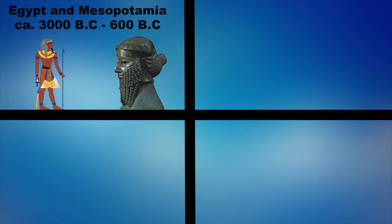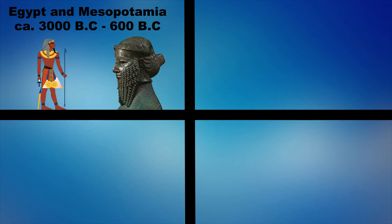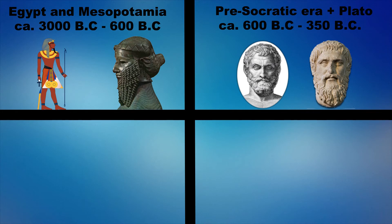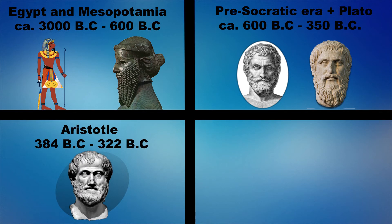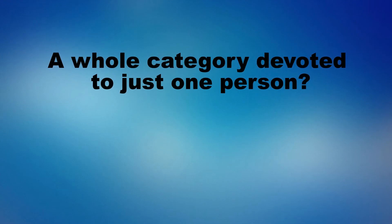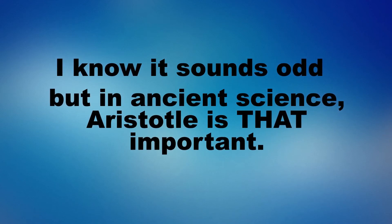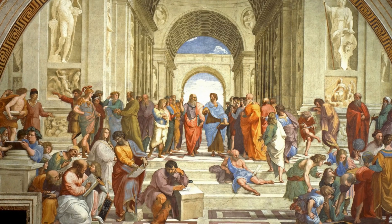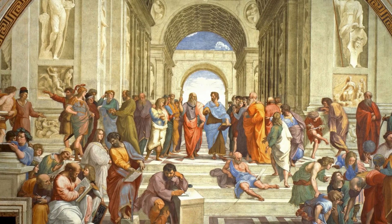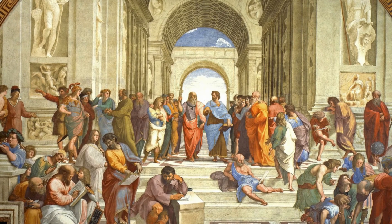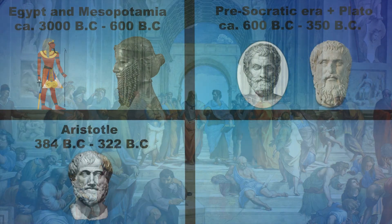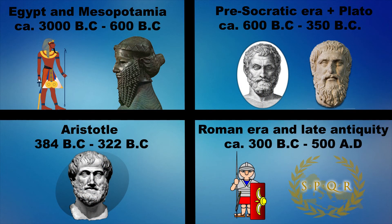To simplify the structure of the series I will divide the time periods covered into four categories. The first will cover the scientific achievements in ancient Egypt and Mesopotamia. The second category will cover the pre-Socratic era, stretching between Thales in around 600 BC to Aristotle in around 350 BC. The third category will focus exclusively on Aristotle and his works in science — and I know what you're thinking: a whole category devoted to just one person? But when it comes to the history of ancient science, Aristotle is undisputedly the most important philosopher in the ancient world, and I will explain why in a future video. The fourth category will cover the Roman and early medieval period, stretching from around the death of Aristotle in around 300 BC to around the 6th century.